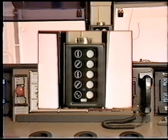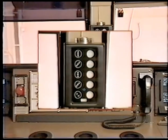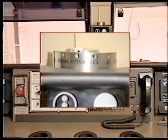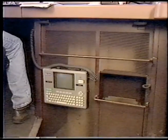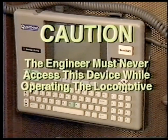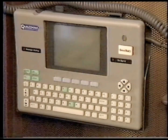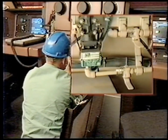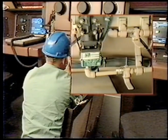The cab signal aspect display is above this console. This unit displays the cab signal aspect as received electronically from the track. There is a switch on the top of the display that must be set according to the cab signal territory in which you are operating. The Qualcomm train communication controller sends and receives data. Caution: the engineer must never access this device while operating the locomotive. The entrance to the nose compartment is located below the center console. The operating air to the front sand magnet valves may be cut out using the cut-out cock located in the nose compartment.